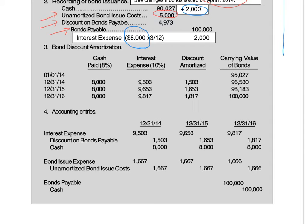Once you've recorded the bond issue journal entry, we're ready to set up a table to amortize our discount using the effective interest method. The basic table has the following columns: date, cash paid — for which you use the stated rate — interest expense — for which you always use the market rate or yield rate — then either discount or premium amortized, and finally the carrying value of the bonds. On the very first date when we issue the bond, the first row is almost all empty. The amount of cash paid remains the same — it's principal times interest times time.